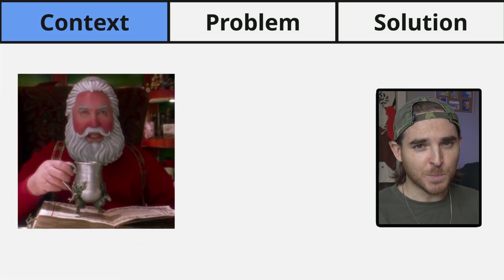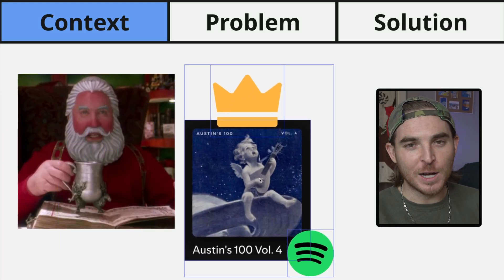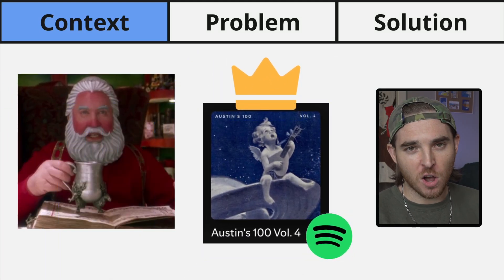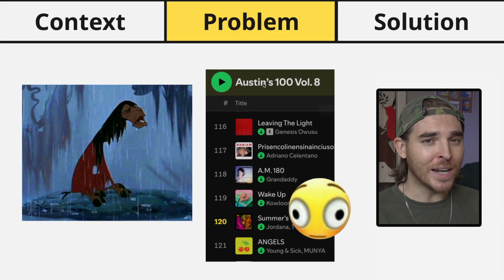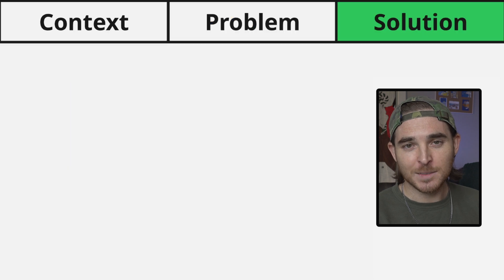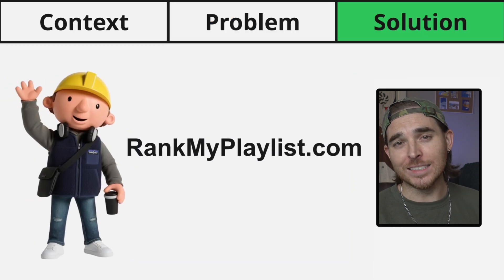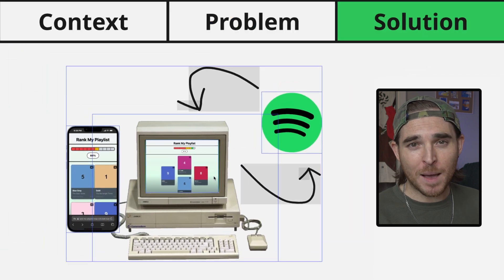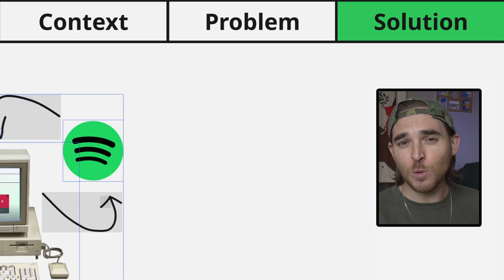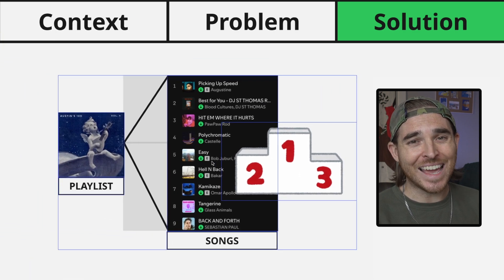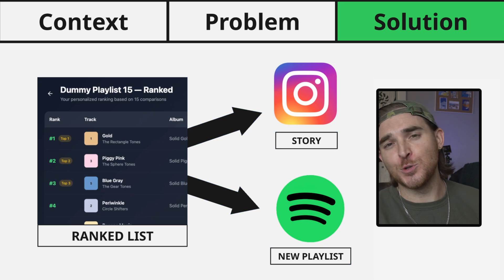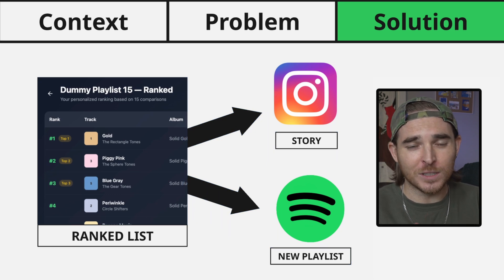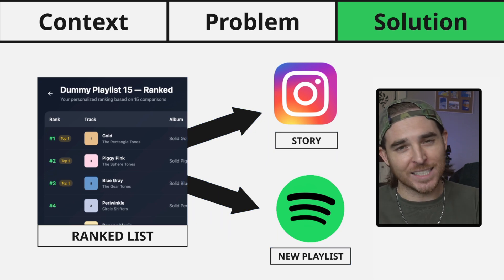Every December, I put together a Spotify playlist of my top 100 favorite songs that were new to me that year, but making the final cuts is hard, so I usually go 20 to 30 songs over budget. That's why I'm building RankMyPlaylist.com — a web app that integrates with Spotify to help users rank a single playlist and then share those results as a list to social media or export the list as a new playlist back to Spotify.